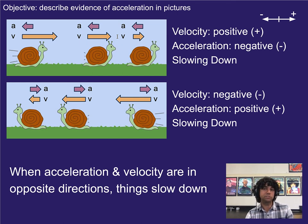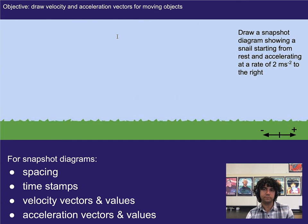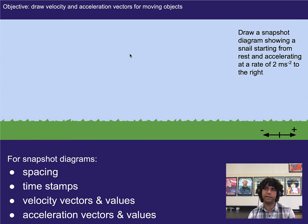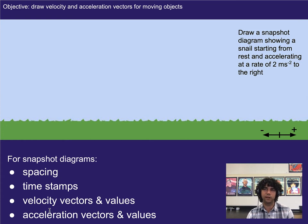If you see something changing direction, that means the acceleration is at an angle to the velocity. Now let's get into drawing snapshot diagrams. For each snapshot diagram, you need to show spacing, timestamps, velocity vectors and values, and the acceleration vectors and values. It's going to be important that we organize our information in a cohesive and clear manner, and that's what this video is going to help with.